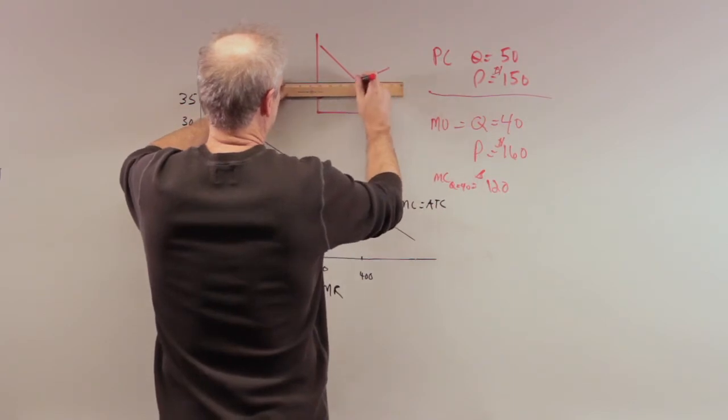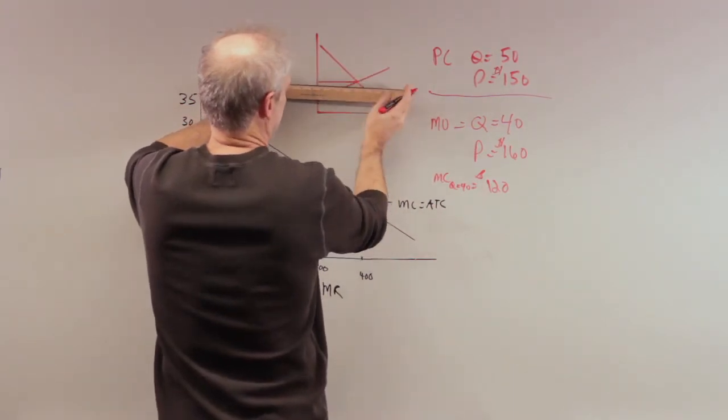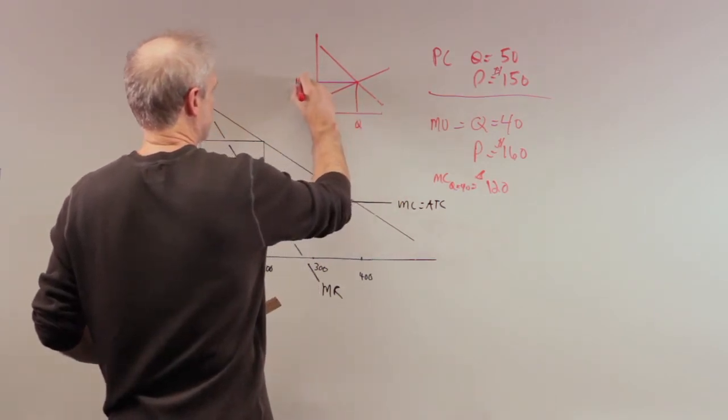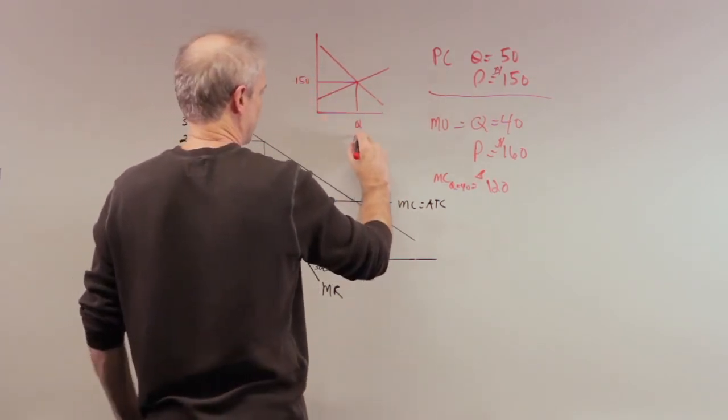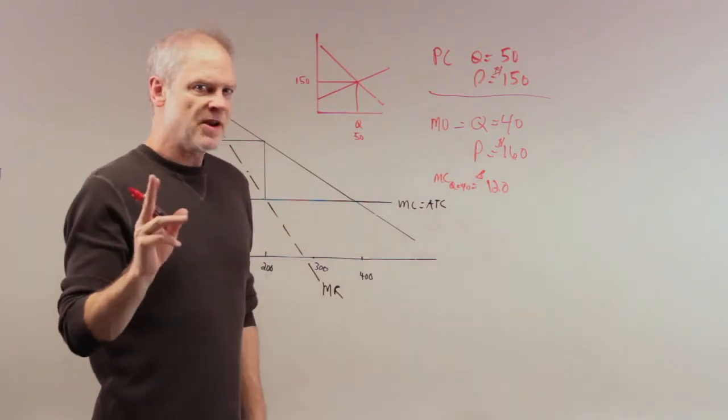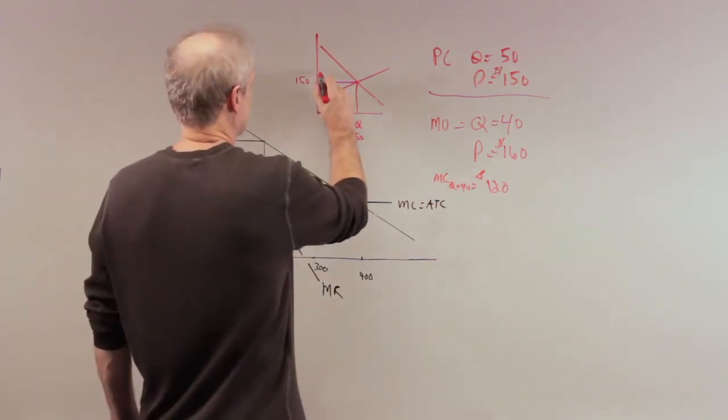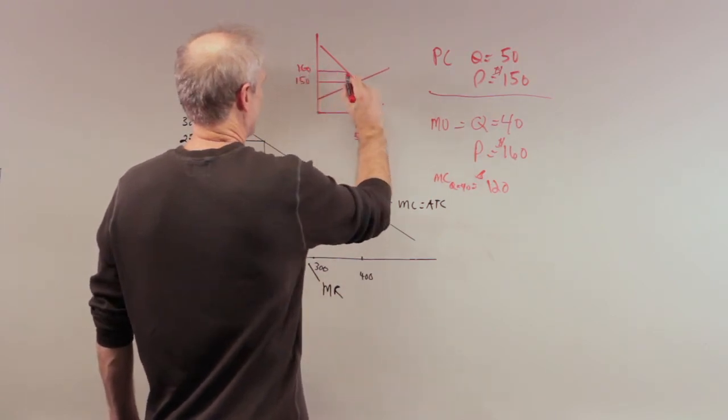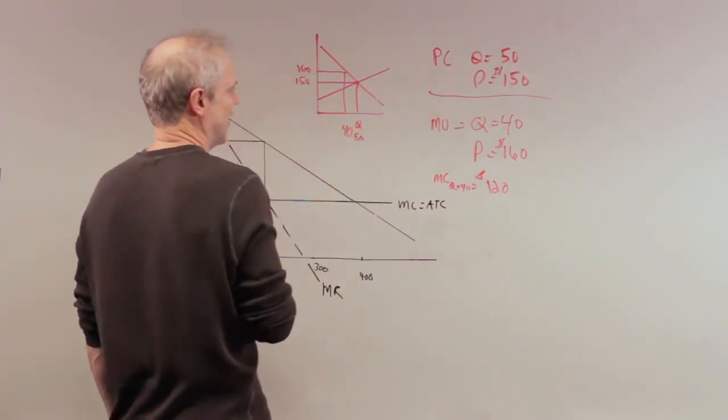And we know that the price under perfect competition, right here, this would be Q, and this price would be $150, and this Q would be 50. Now they're telling you the monopolist is different. The monopolist is charging $160, producing 40 units, not 50.